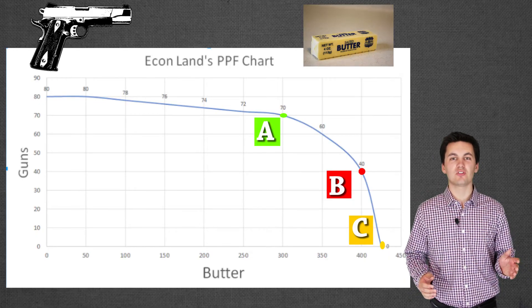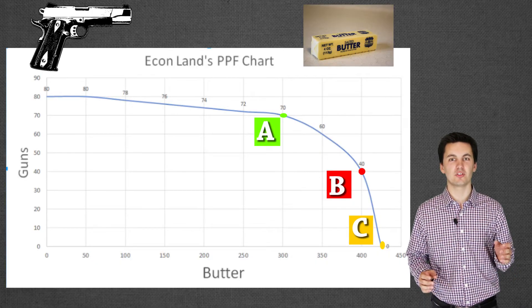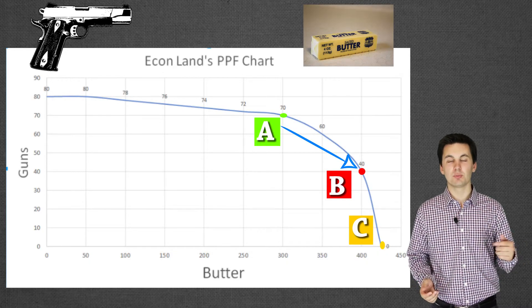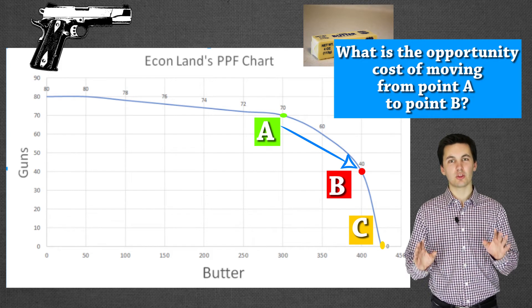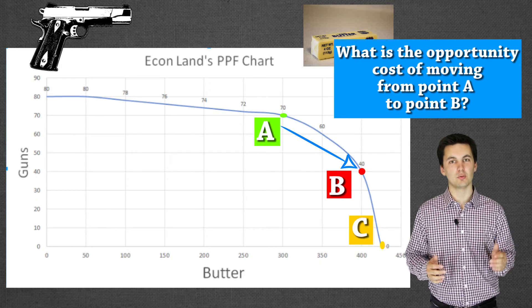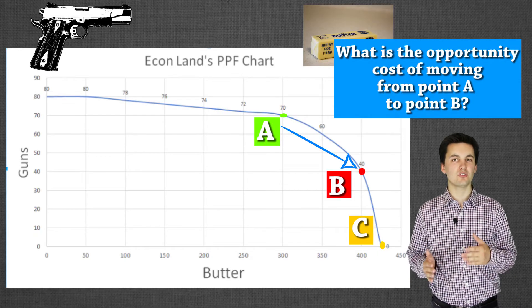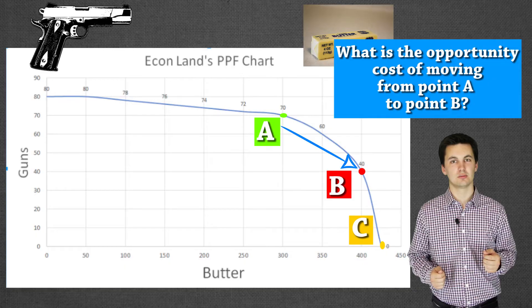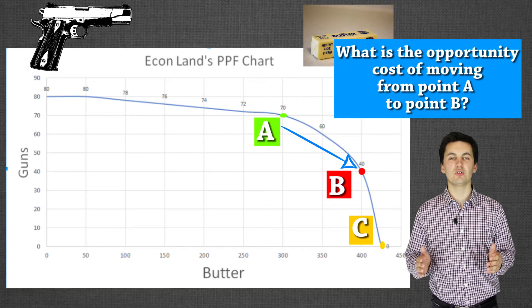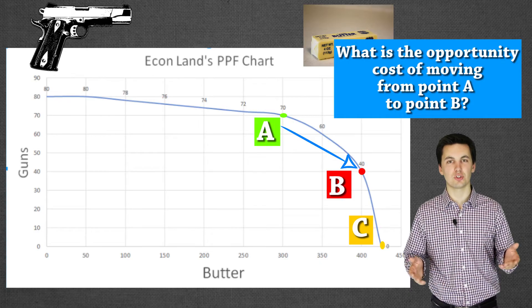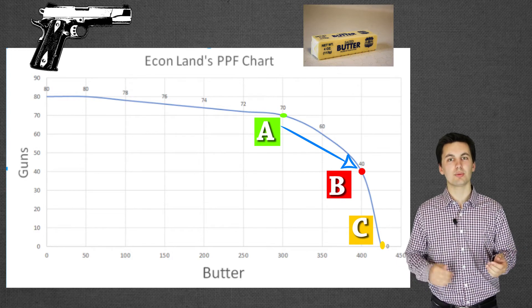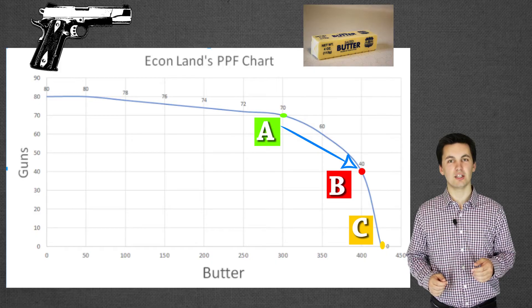Another thing we can see with PPF charts is opportunity costs. On the chart, we have guns and butter again. If we wanted to move from point A to point B, what would the opportunity cost be? Pause this video and try to figure out exactly what the opportunity cost is of moving from point A to point B. Remember, opportunity cost is what we give up — what we are not deciding to do because of a different choice we've made. Our opportunity cost here would be 30. For us to move up 100 additional units of butter, we give up the production of 30 guns. That's our opportunity cost — we can see the trade-offs that are occurring here.